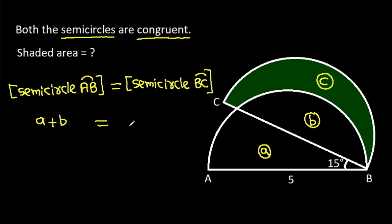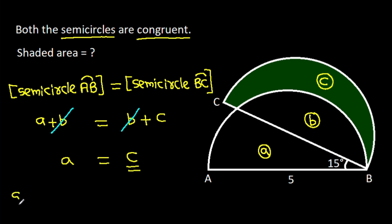Then a plus b equals b plus c, and b gets cancelled, so a equals c. And c is the shaded area. Suppose this point is P, then a equals the area of triangle ABP.